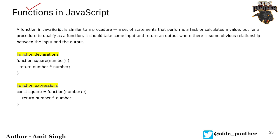There are two ways to define functions. One is function declaration, where we use the function keyword, give the function a name, and optionally pass arguments. The second is the function expression, which is a different way of declaring a function. You will see both in real-world code, so don't get confused.